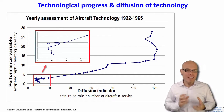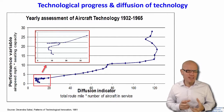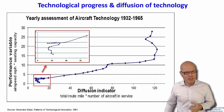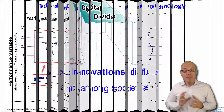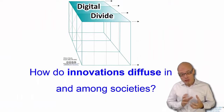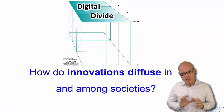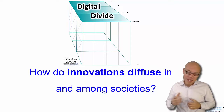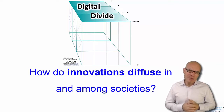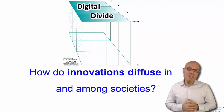Today we'll talk about the second one — the diffusion process — and ask, how does this diffusion process actually work? The diffusion of innovation is a large body of literature, so we'll study it more generically. And then as a second part, we ask particularly about the particularities with regard to the spread of digital innovations.